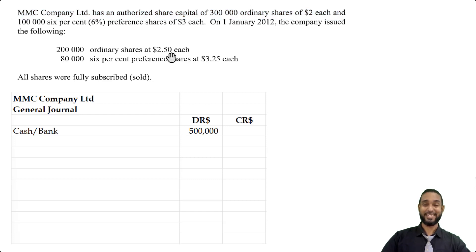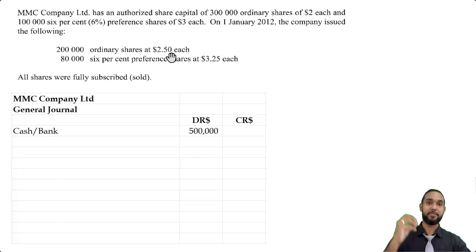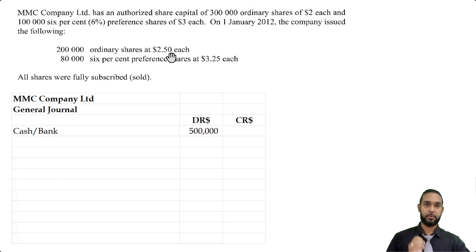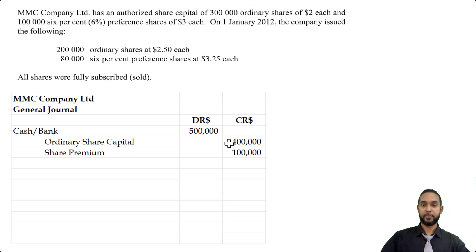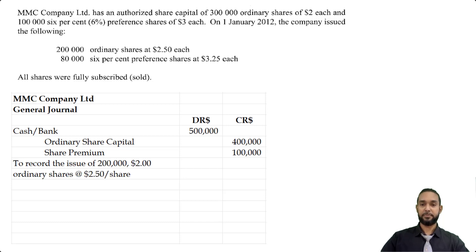Since we issued at $2.50 each, we're issuing $0.50 above the par value. The amount above the par value for which the shares are issued — $0.50 — is called the share premium. When recording the issue of shares, we need to record the par value and the premium separately, because the premium does not count towards the authorized share capital value. So 200,000 shares at $2.00 par value gives us $400,000 credited to ordinary share capital. The remaining $100,000 — that's 200,000 shares by $0.50 — is credited to share premium. The narration reads: to record the issue of 200,000 $2.00 ordinary shares at $2.50 per share.